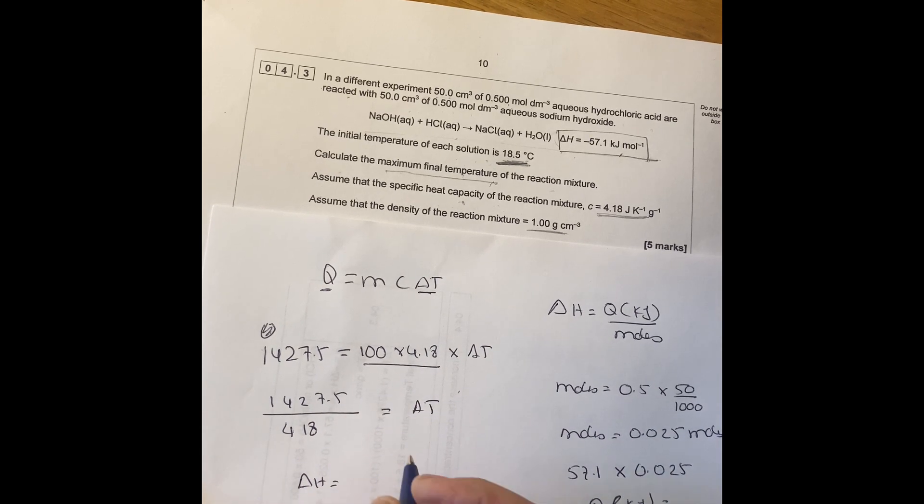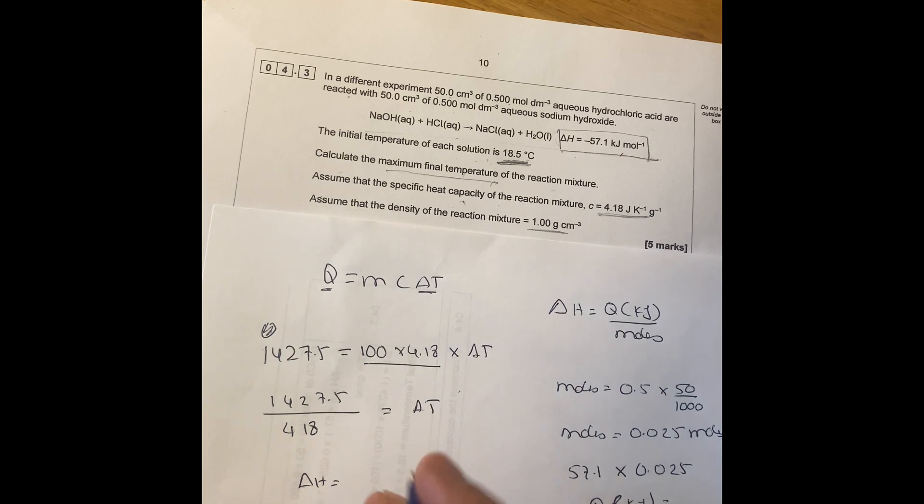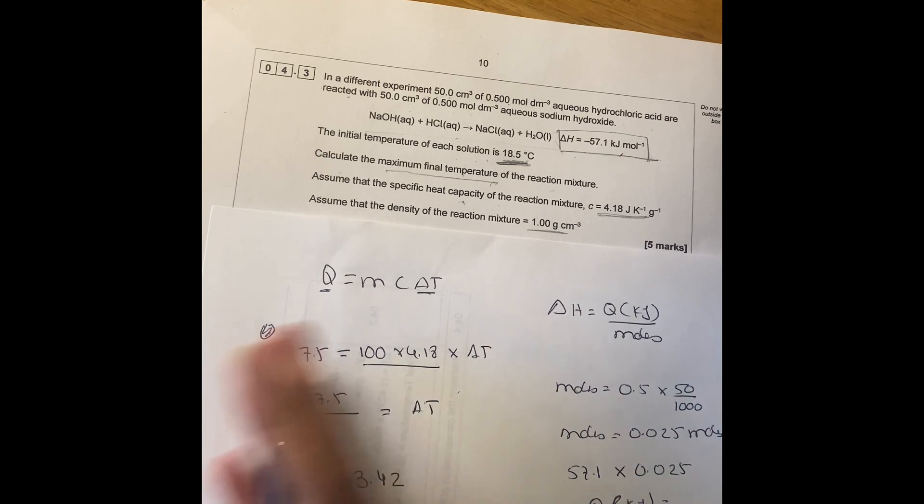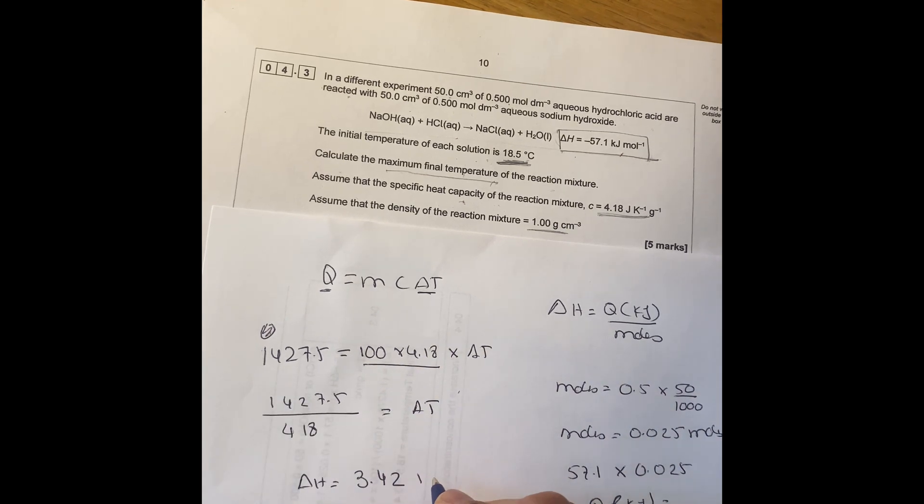So delta T is going to give you, let me just work it out, it gives me 3.42. Delta T gives you 3.42 for the change in temperature.